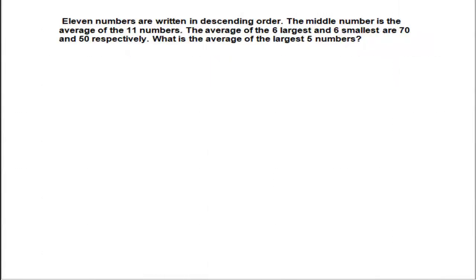This is problem number 30 on page 106. It says 11 numbers are written in descending order: 1, 2, 3, 4, 5, 6, 7, 8, 9, 10, 11. The middle number, which is the 6th number, is the average of all 11 numbers. So if the middle number is x, it is the average of all 11 numbers.